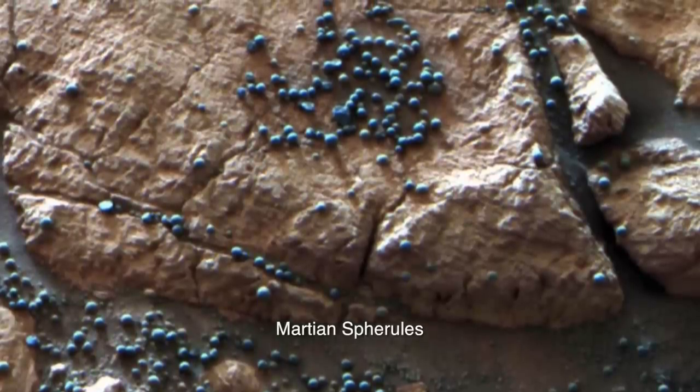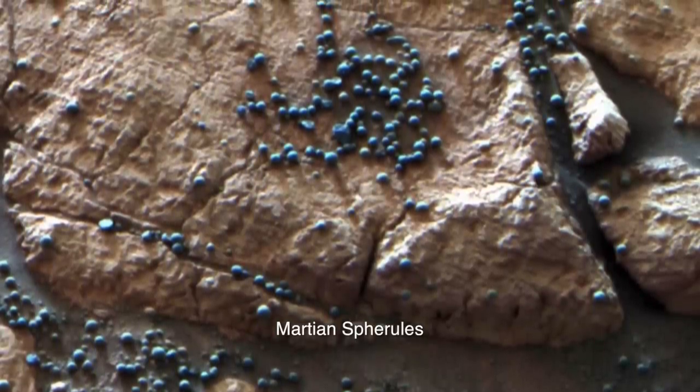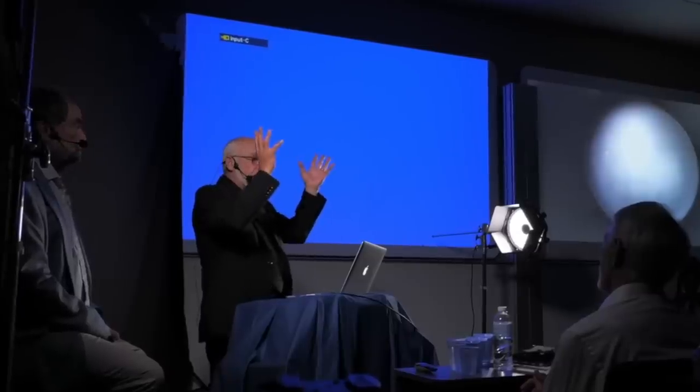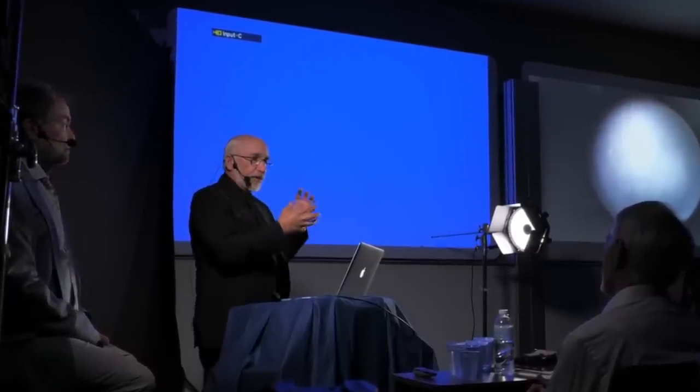And as Monty pointed out, nobody knew or could figure out why these things were in such nice little spheres. So there they are. They found - it could be, at least I think they should further investigate - the genesis of these Martian blueberries in a process very much like this.